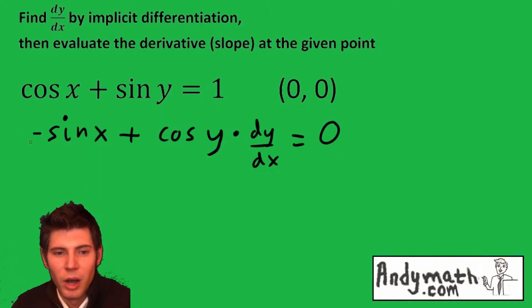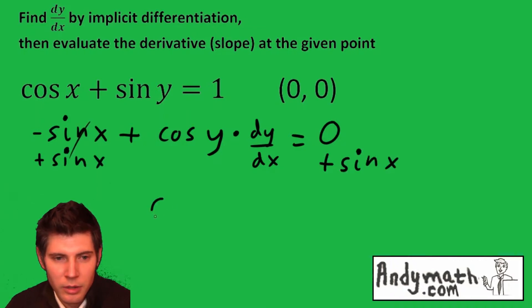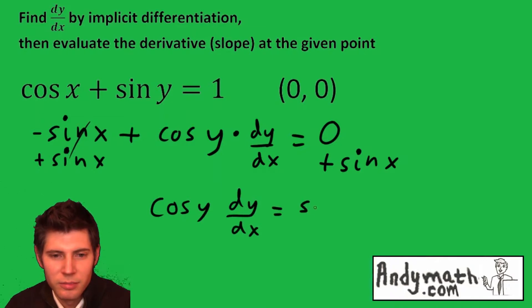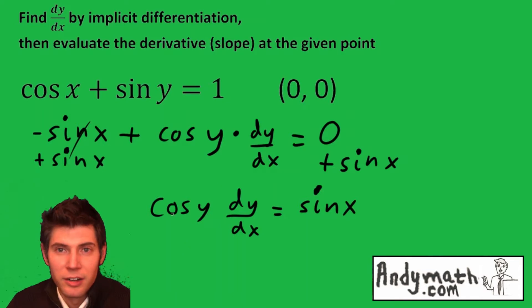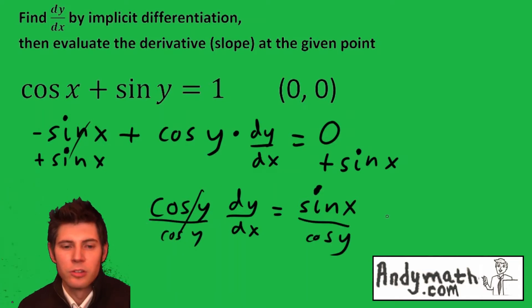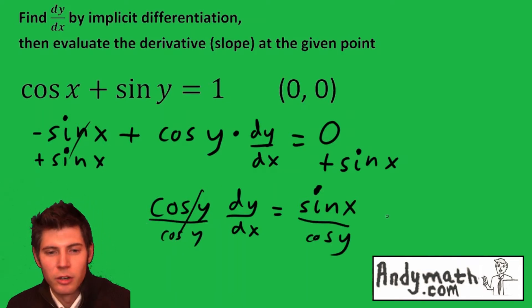Now we want to isolate the dy/dx. So I'm going to add sine x to both sides, and we get cosine y dy/dx equals sine x. Now divide both sides by cosine y. So dy/dx is sine x over cosine y.